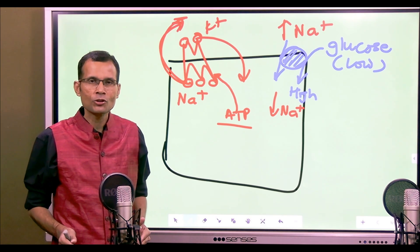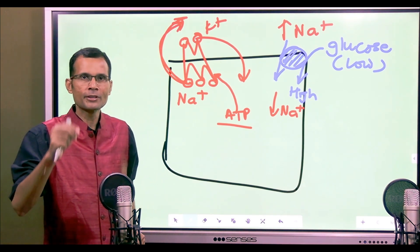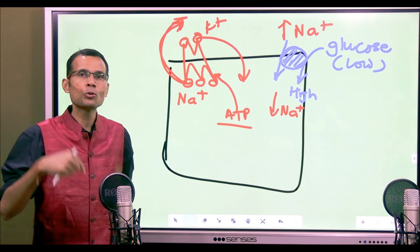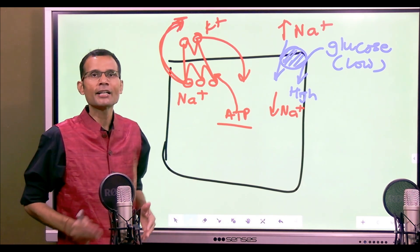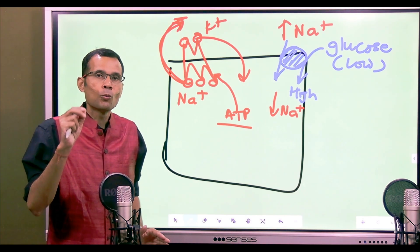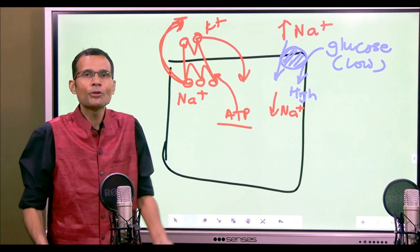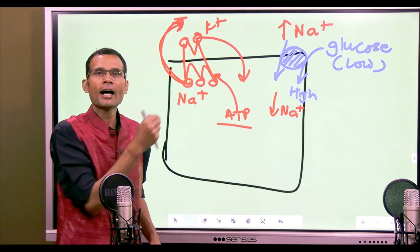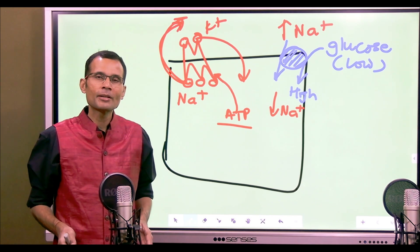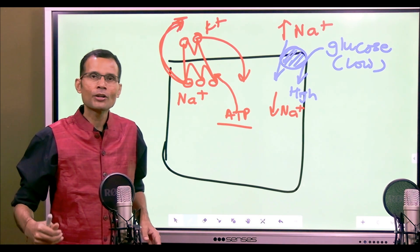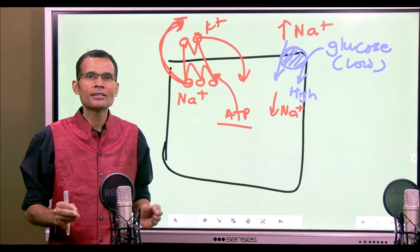It is called secondary because the ATP was not used directly by this carrier protein. In primary active transport, both substances — sodium and potassium — move from low to high concentration. In secondary active transport, one substance moves from high to low, and the potential energy of that movement is used to transport another substance from low to high concentration. That is the summary of passive vs. active transport, and within active transport, primary vs. secondary, where ATP use is direct or indirect.